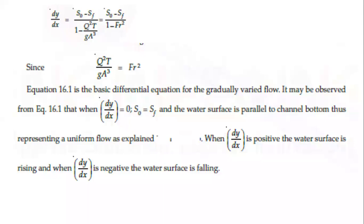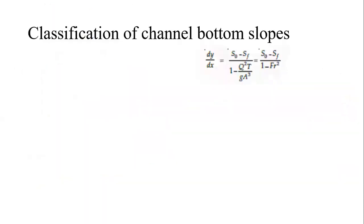When dy/dx is negative, it indicates a falling water surface. Based on this GVF dynamic equation dy/dx = (S₀ − Sf)/(1 − Q²T/(gA³)) = (S₀ − Sf)/(1 − Fr²), we now classify the channel bottom slopes. This classification is important for examinations.